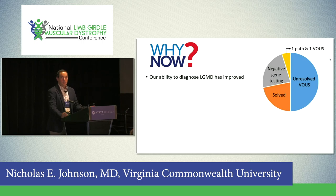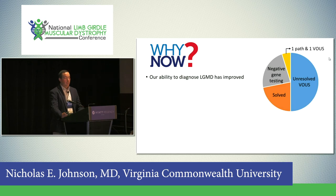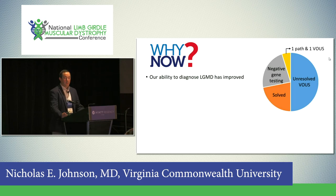Why are we doing this now? Our ability to diagnose limb girdle muscular dystrophy has improved. The schematic here shows the outcome of that same free genetic sequencing test that MDA and the Jane Foundation put together — it's great that we have what we consider solved cases with confirmed diagnoses. But there are problems with the rest of the pie: either negative genetic testing or unresolved variants of unknown significance. The cost of commercial testing has lowered to at least $250, which has increased the number of people with a good diagnosis.